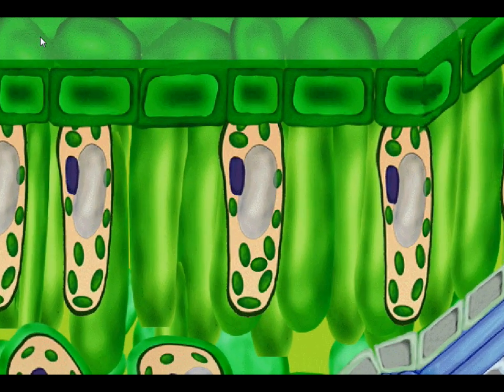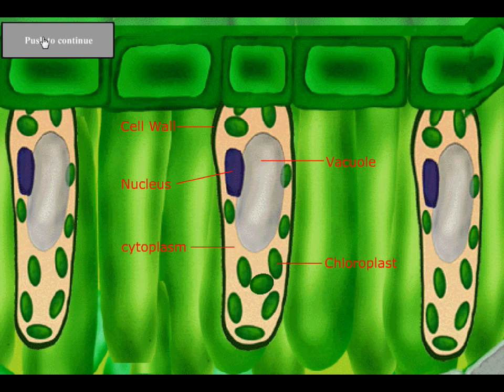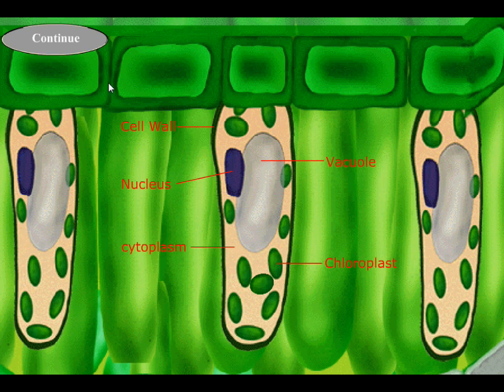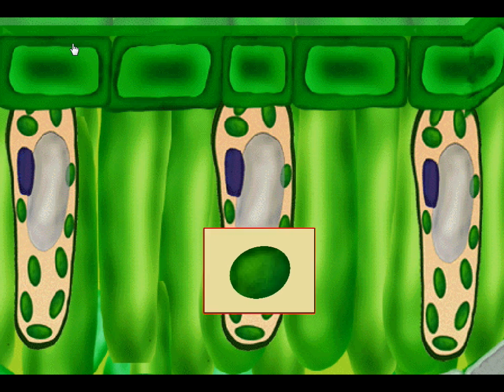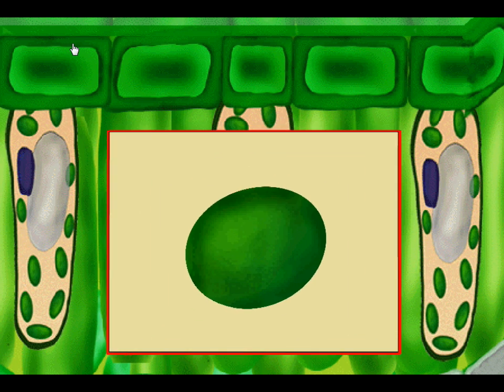We're going to zoom into those palisade cells since that's where a lot of photosynthesis is taking place. You see a typical cell: cell wall, nucleus, vacuole, cytoplasm, and most importantly, one of those chloroplasts. Let's take a look at one of those chloroplasts.